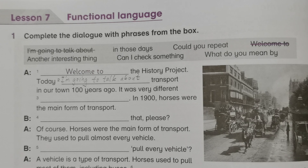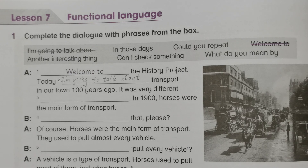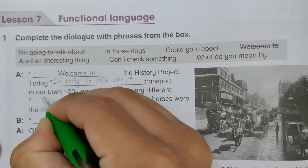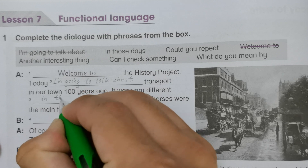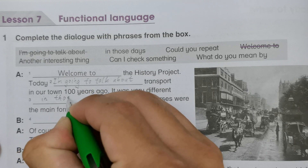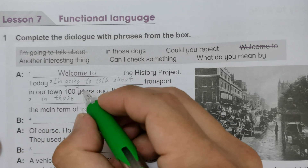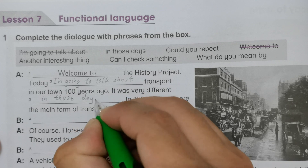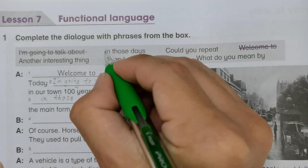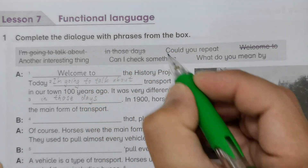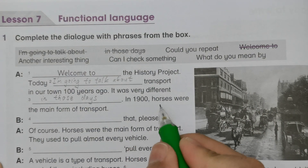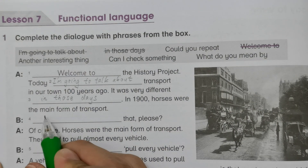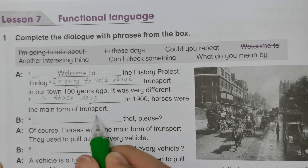But this one should be 'in those days.' So: in those days — in 1900, horses were the main form of transport.